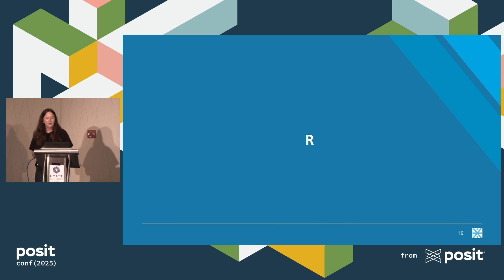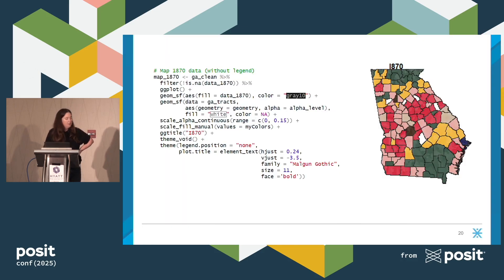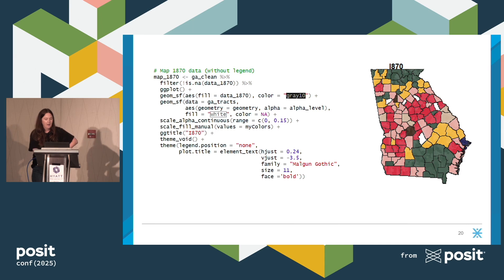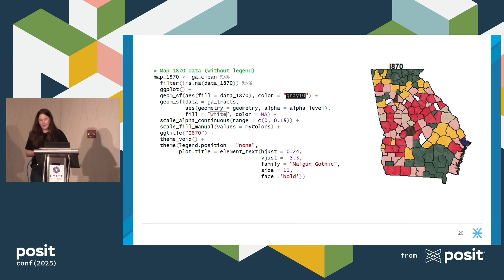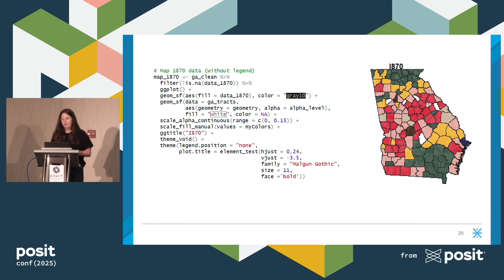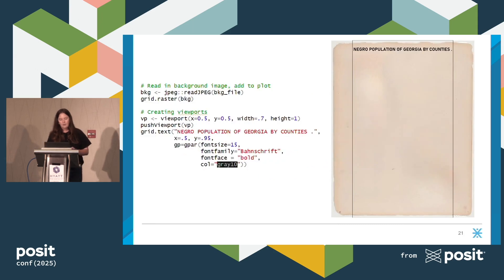For our R walkthrough, we used tidyverse, ggplot2, grid, and extrafont. In Python we started by building the overall figure, but here we started by creating our two Georgia graphs using ggplot2. We removed missing data, plotted the counties with a dark gray outline, overlaid those transparent census tracts, set manual themes, and used similar code to create the 1880 graph.